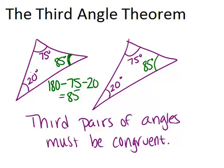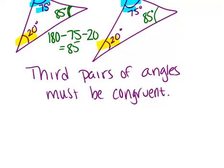So as long as two pairs of angles are congruent, such as 20 and 75, then the third pair of angles will always have to be congruent as well. Now keep in mind this applies even if you don't know the exact numbers for the angle measurements.